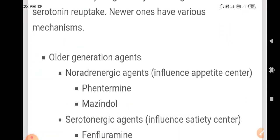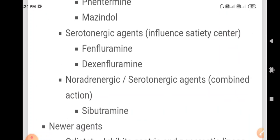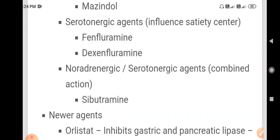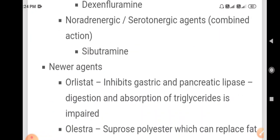Older anti-obesity drugs act by inhibiting noradrenaline or serotonin reuptake. Newer ones have various mechanisms. Older generation agents: noradrenergic agents influence appetite center, phentermine, dexfenfluramine. Noradrenergic serotonergic agents combined action: sibutramine.